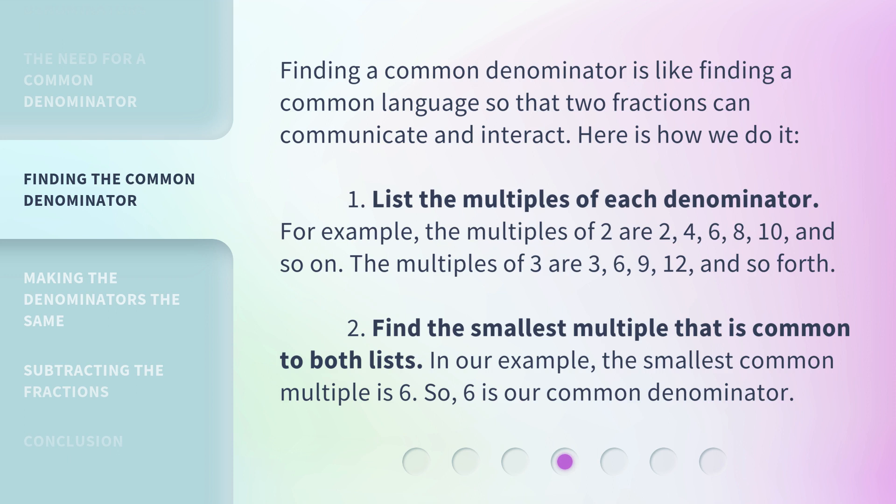2. Find the smallest multiple that is common to both lists. In our example, the smallest common multiple is 6. So, 6 is our common denominator.